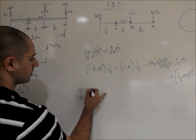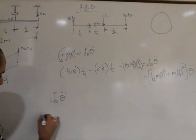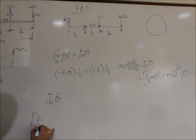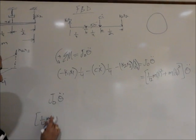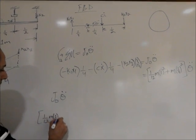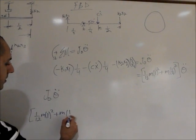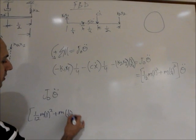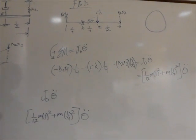J theta dot. In this case, it actually came out to be one over twelve m l squared plus m times one-fourth squared theta double dot.